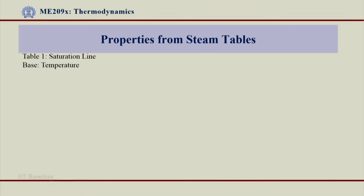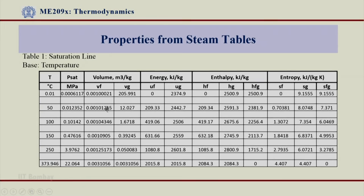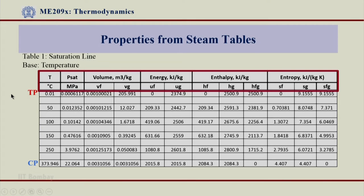Ultimately we want steam tables to derive properties at a given pressure and temperature condition. Let us look at Table 1, which depicts the saturation line with a base of temperature. I have made a small snippet from Table 1 and it looks like this. You can see the first column is temperature and the second column is P_sat at those values. It runs from the triple point at 0.01°C to the critical temperature at 373.946°C.